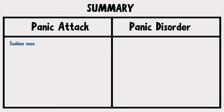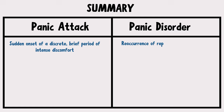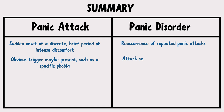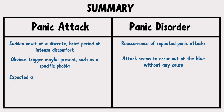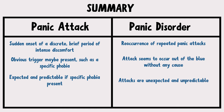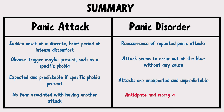To sum up: a panic attack is a sudden onset of a discrete, brief period of intense fear or discomfort. Panic disorder refers to reoccurrence of repeated panic attacks. Panic attacks usually have an obvious trigger such as a specific phobia, whereas in panic disorder the attack occurs out of the blue without any cause. Panic attacks are usually expected and predictable, whereas in panic disorder attacks are unexpected and unpredictable. In panic attacks, there's no fear associated with having another panic attack, whereas in panic disorder the person will always anticipate and worry about another attack.